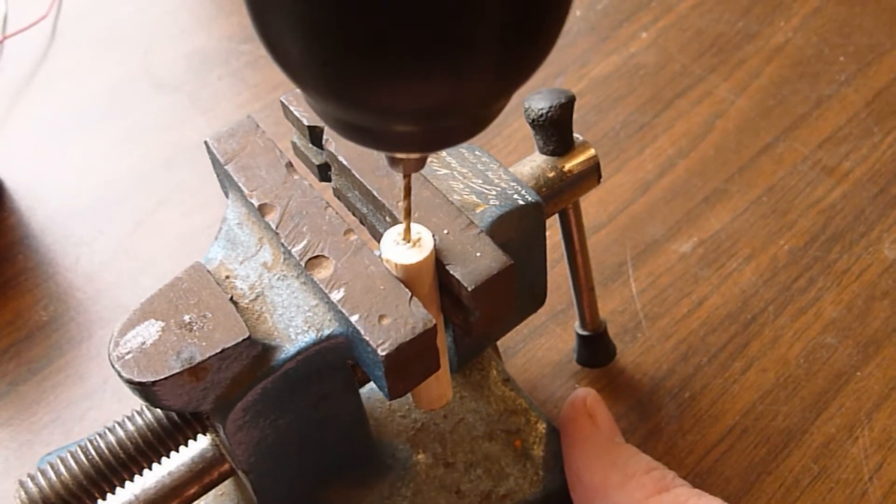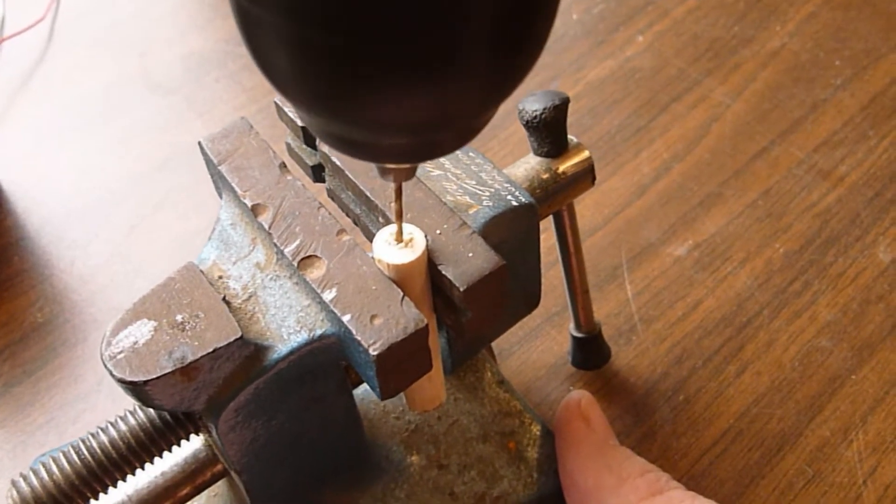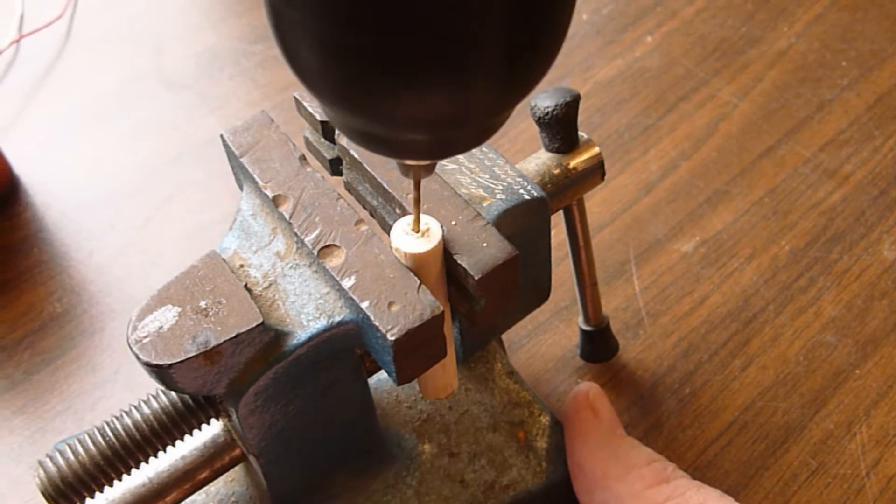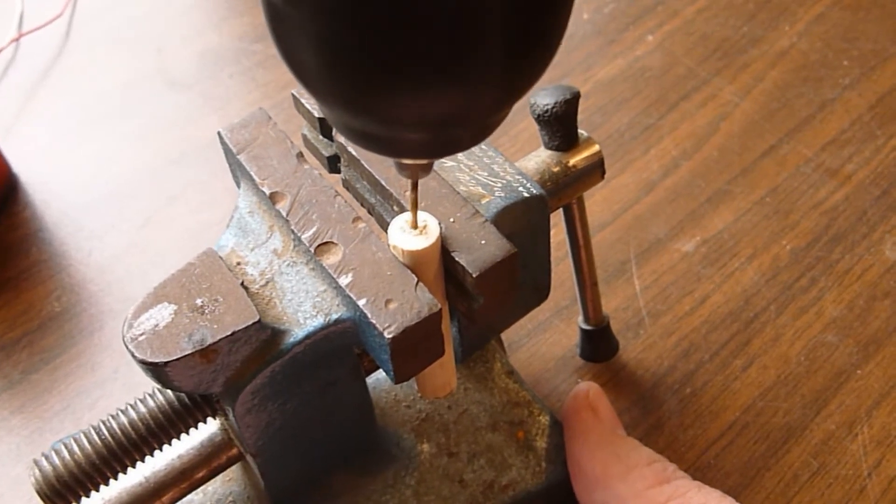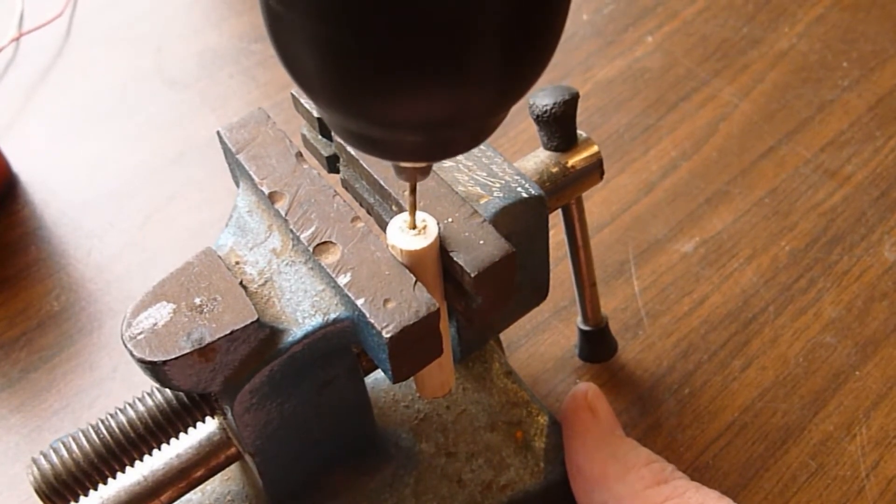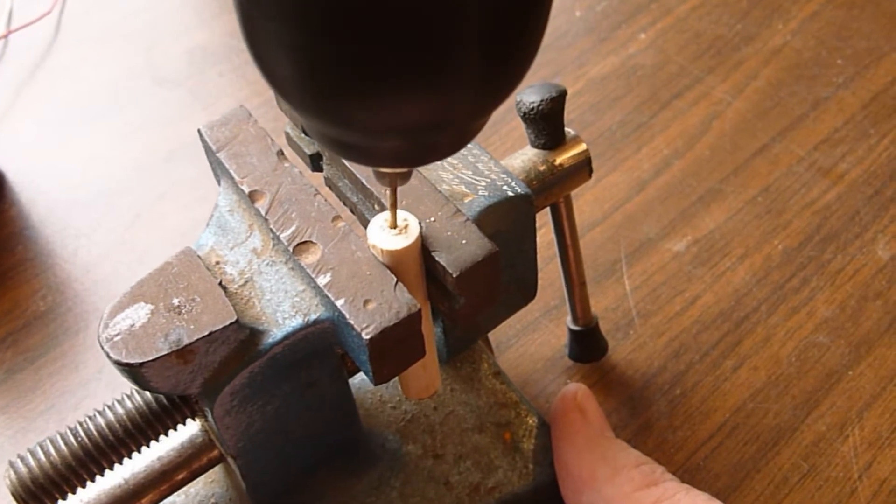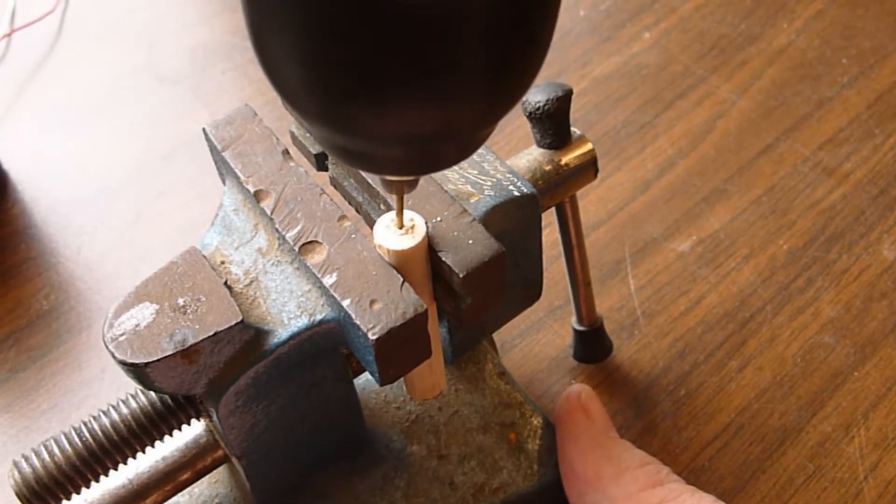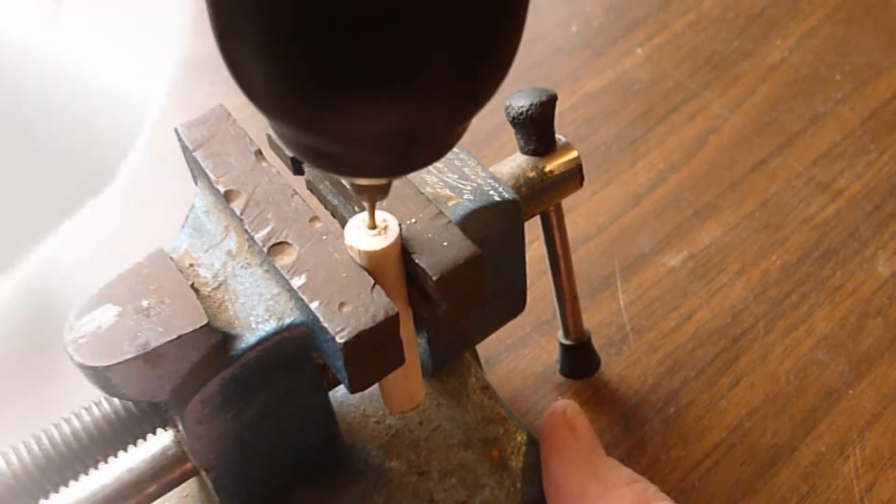The next step is to drill a 1.6 inch hole about a half inch deep in the center of one end of the wood dowel. You also must drill a 7.64 inch hole about three quarters of an inch deep in the other end of this wood dowel.